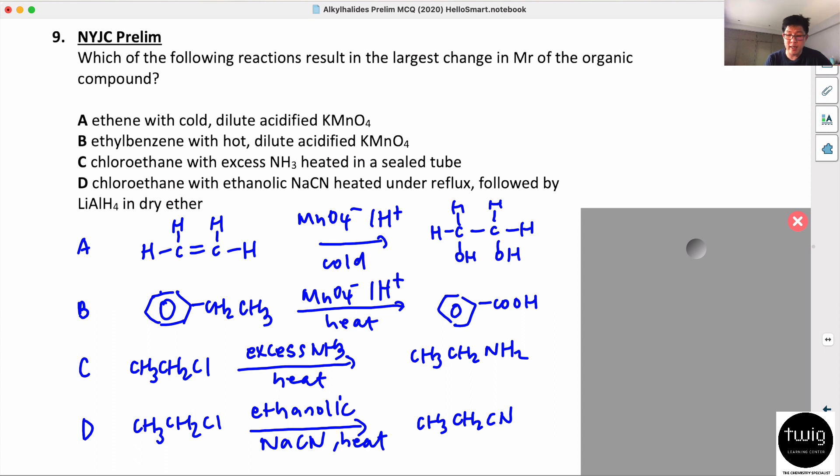So if you're going to calculate which one has the largest change in Mr, for the first one I'm just going to add 2O and 2H. You can see that? I added 2 hydrogen and the Mr of 2 oxygen. 16 plus 16 is 32. So you notice the change is 34.